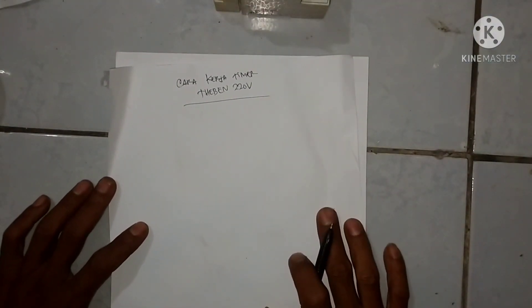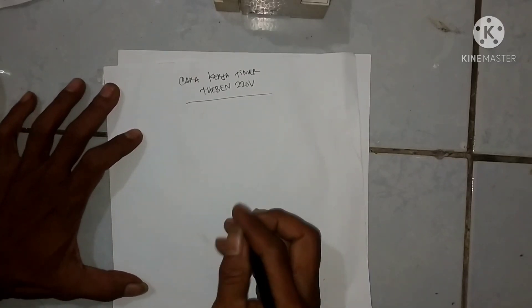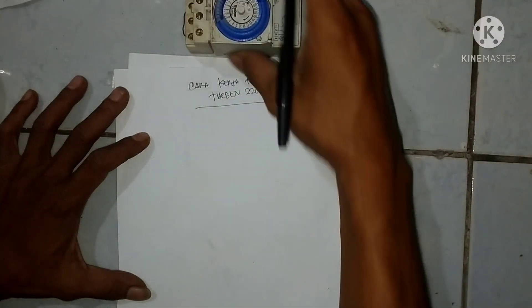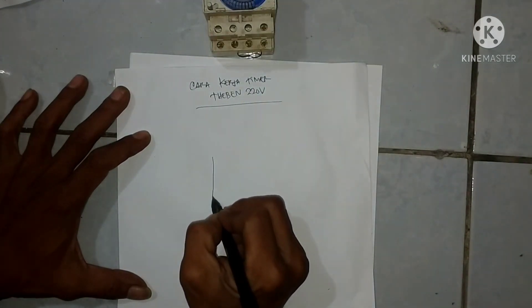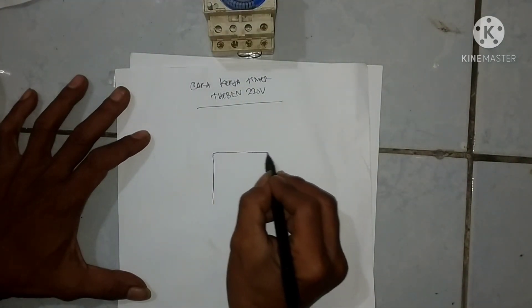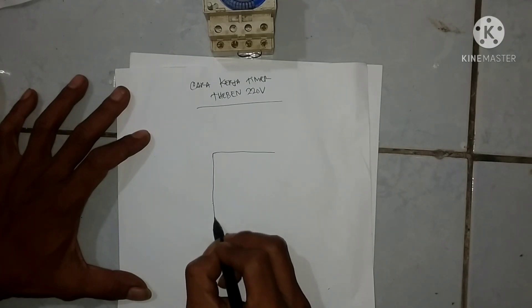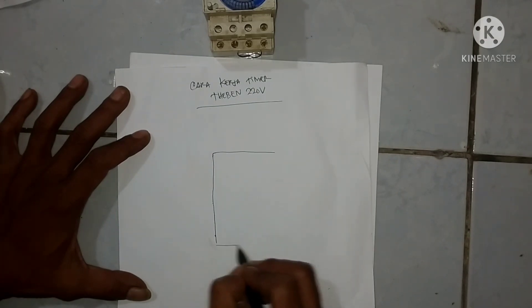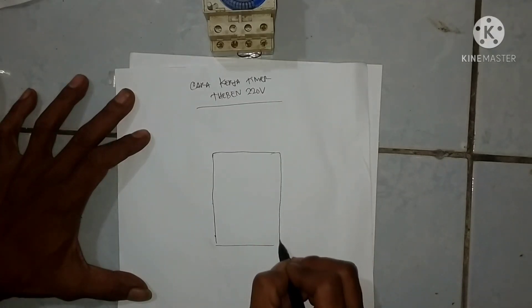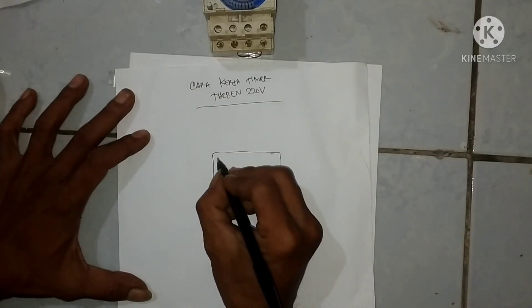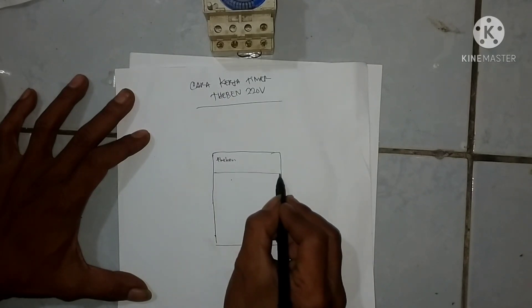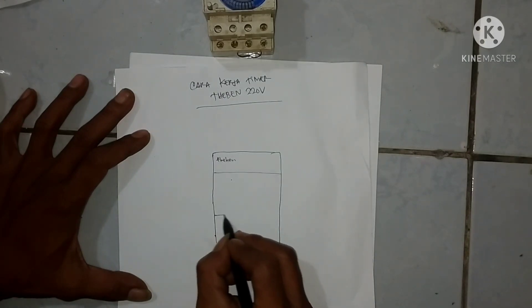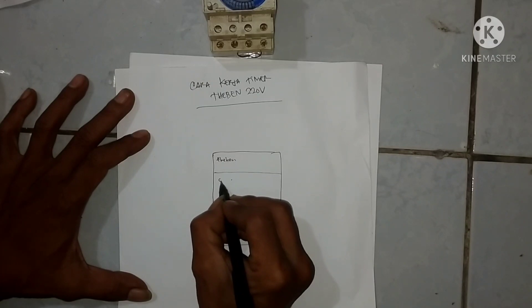Sekarang saya coba gambarkan ya biar lebih enak dijelaskan. Saya coba wiring ulang timer yang barusan saya pegang ke aplikasi gambar ya. Ini saya tulis timer Theben sesuai barang yang ada di atas kertas ini.